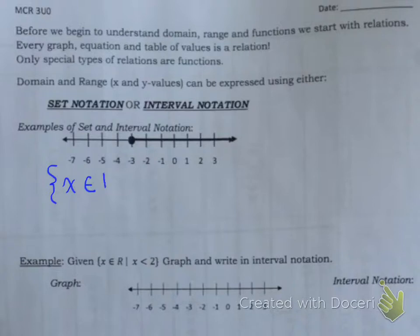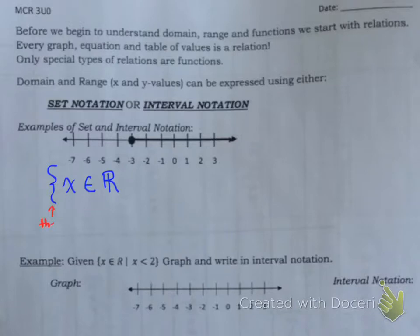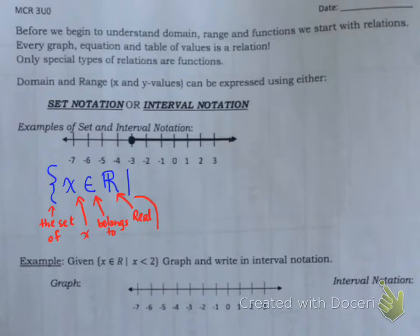And then now we're going to watch how we draw the real number symbol. We draw one bar, a second bar, and then an R with the first bar. Now let's talk about what this means in words, because this is the representation mathematically. Mathematicians are international - it's understood internationally. But we need to be able to transfer this in words. In words, this means the set of X belongs to real numbers. Real numbers are basically any number you can graph on a number line.